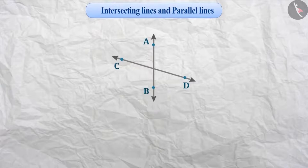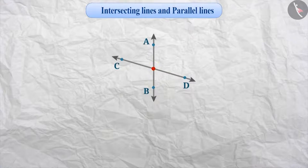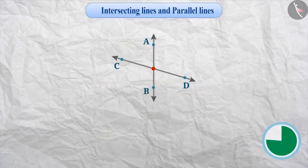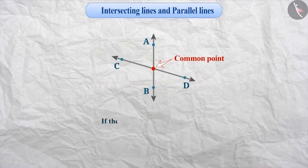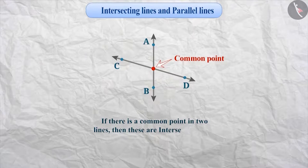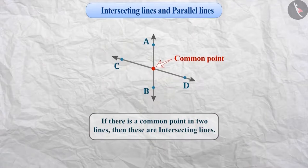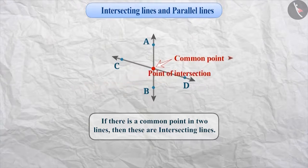Now, look at this pair of intersecting lines. Both the lines are intersecting at this point. This point is on both the lines, which means this point is the common point of both the lines. We can say that if two lines meet at a point, or if there is a common point in two lines, then these are intersecting lines. The point on which intersecting lines intersect is known as the point of intersection, or we can also say that the common point of intersecting lines is called the point of intersection.